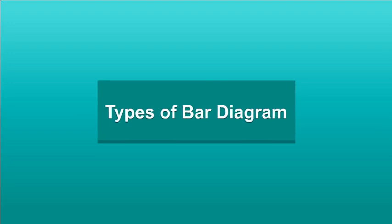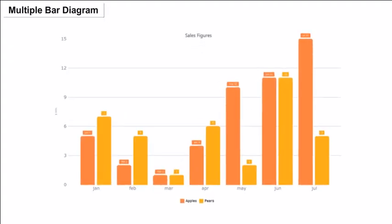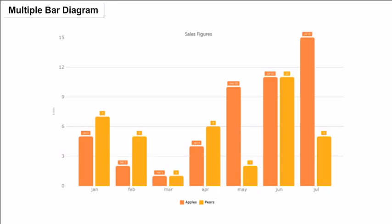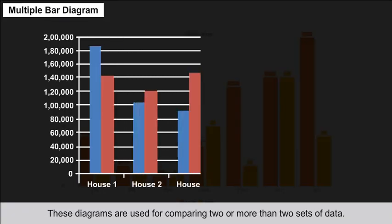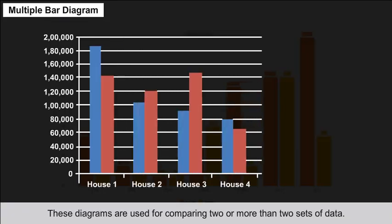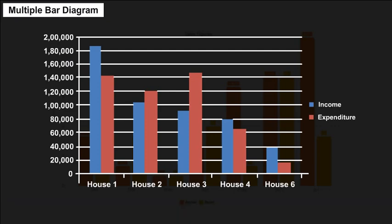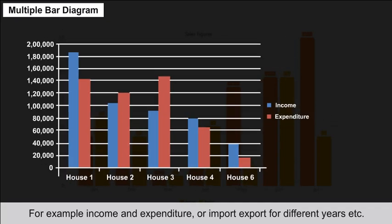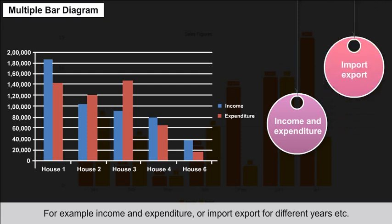Multiple Bar Diagram: Multiple bar diagrams are used for comparing two or more sets of data. For example, income and expenditure, or import-export figures for different years.